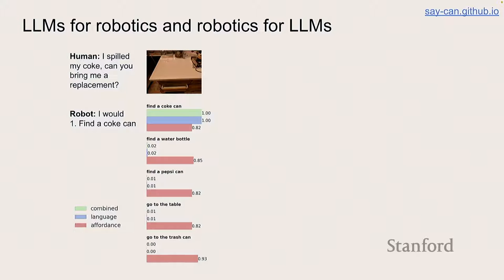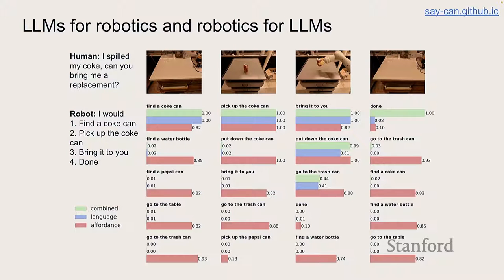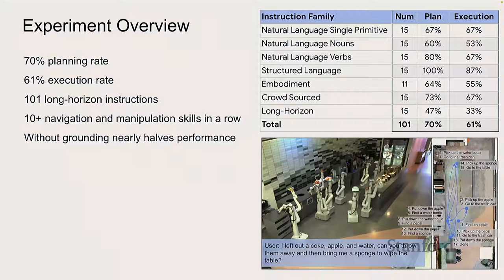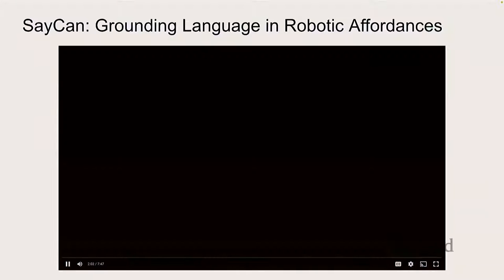If I said 'I spilled my Coke, can you bring a replacement,' it picks up on the idea of 'replacement' rather than something to help clean up, understanding that replacement means the replacement for the Coke. The affordances tell it to find a Coke since it can't pick one up yet. We achieved about 70% task success, and with a better language model we got this up to about 85%. We can just swap out the language model as things improve. Importantly, this grounding halves the errors — robotics actually has something to bring to the table.